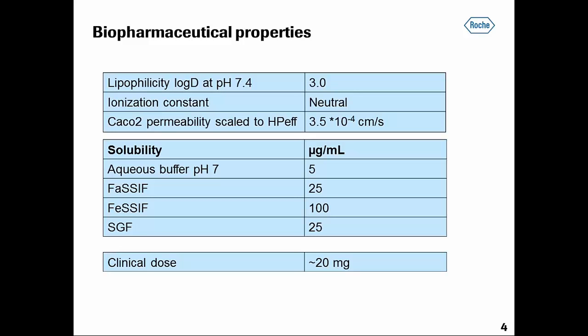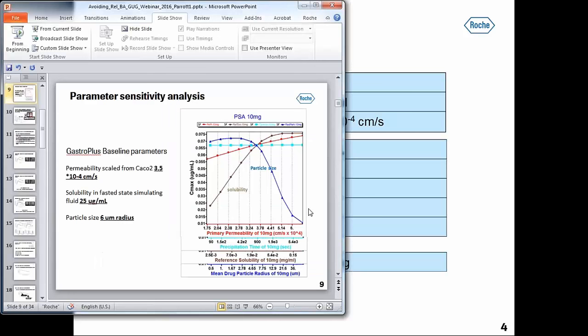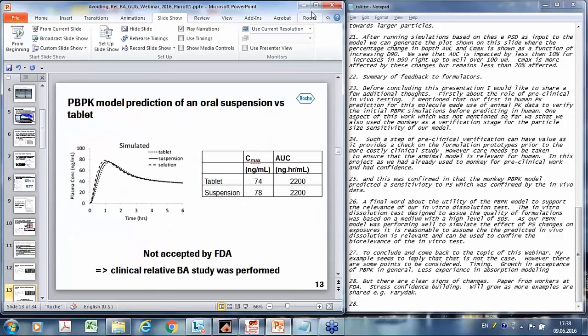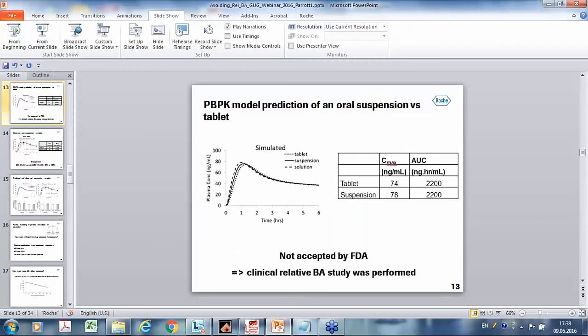There is a question about whether the FDA provided any rationale for rejecting the models. Unfortunately, I'm not able to give a lot more information on that. We were hopeful this might allow us to avoid the study, but when we received the negative response, we really wanted to move ahead with our molecule, so the decision was made to go ahead and do the study as requested without too much dispute. In the interest of time, we will move to Christoph's presentation, with remaining general questions covered at the end.